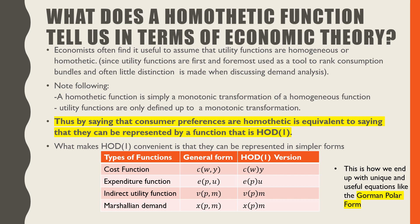Same thing with our expenditure function, where we just place utility on the side, and our indirect utility functions and Marshalian demands where we just place income on the side. Those are interesting because they imply a straight income expansion path — linear ones going straight through the origin. This is how we come up with unique equations like those used in Gorman polar form.